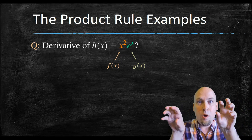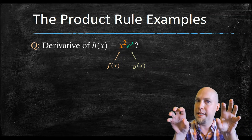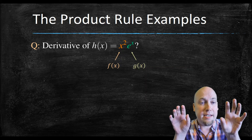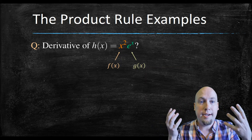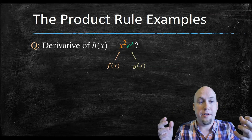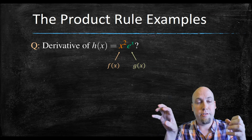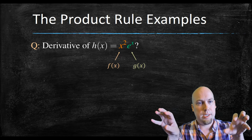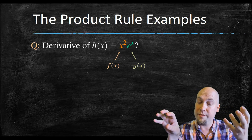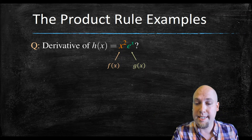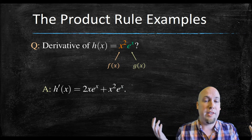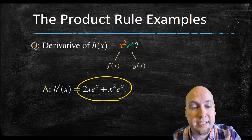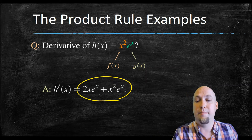Once you've identified the two functions, it's just plug and chug into the product rule. Take the derivative of the first one, x squared, times the second one, e to the x, plus the first one, x squared, times the derivative of the second one, e to the x. When you do all of that, you get 2x times e to the x plus x squared times e to the x.